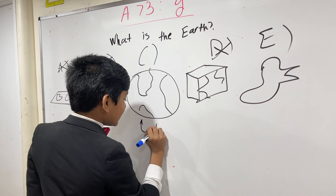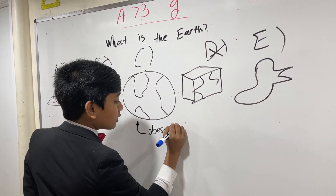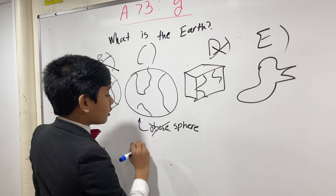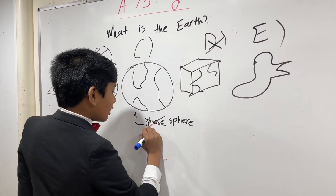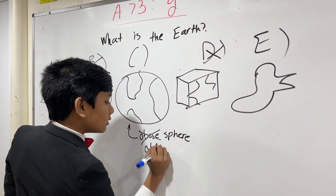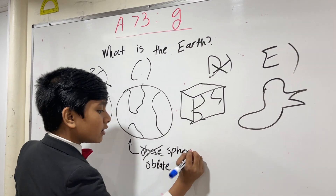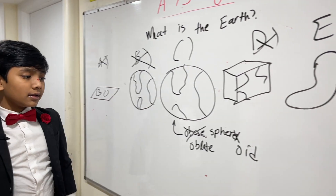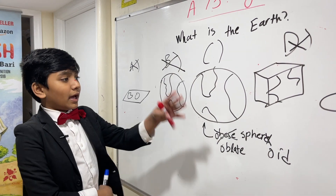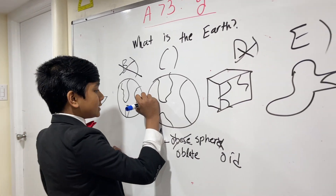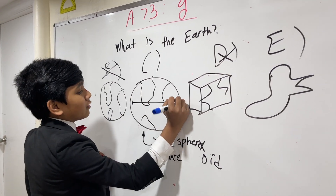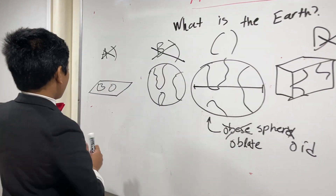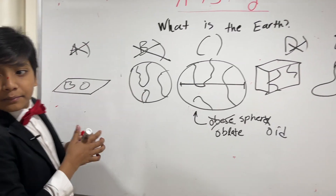This is what's known as an oblate sphere. However, since 'obese' is not politically correct, we're going to say 'oblate' instead, and not 'sphere' — 'spheroid.' So this is what's known as an oblate spheroid, because it's slightly fatter on the edges. Let me give you a new diagram just so you can see what I mean.